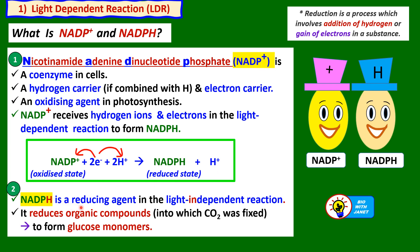NADPH is formed in the light-dependent reaction and carries hydrogen into the light-independent reaction stage. It is a reducing agent in the light-independent reaction because it gives away its hydrogen. Reduction involves addition of hydrogen or gain of electrons. NADPH provides hydrogen to reduce organic compounds — the compounds into which CO₂ is fixed — and together with carbon dioxide and hydrogen from water, glucose monomers and finally glucose molecules are formed.